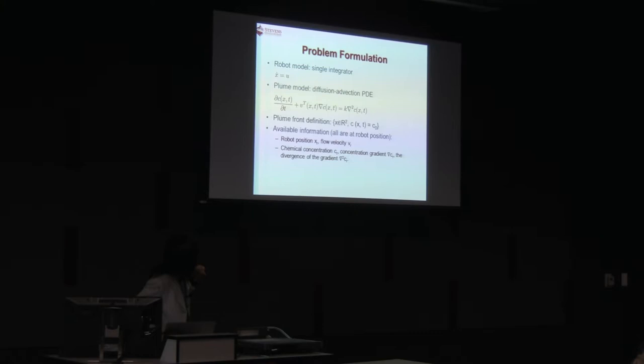The plume front definition: what we track is defined by C(x,t) equals C0, which means that we consider a constant concentration value as a front. This is time-varying if one moves along the path, right? We assume the robot can sense current position and the flow velocity, and it's doable. They have the sensor to sense the flow and the robot position. We assume the robot can measure the chemical concentration C at the robot pose. For the gradient and the divergence of gradient, which is the second derivative, we may estimate it. Although in this work, we didn't use estimated values, but we could incorporate that in future work.